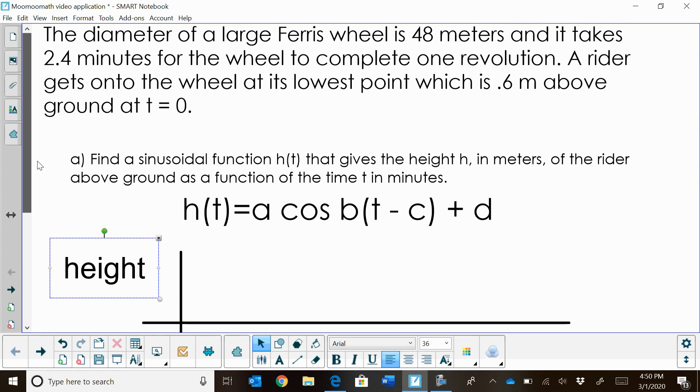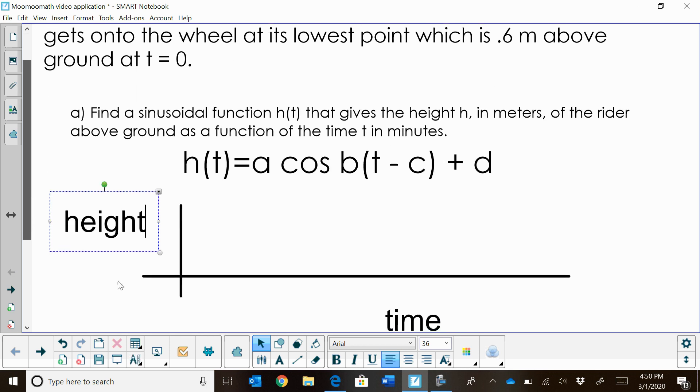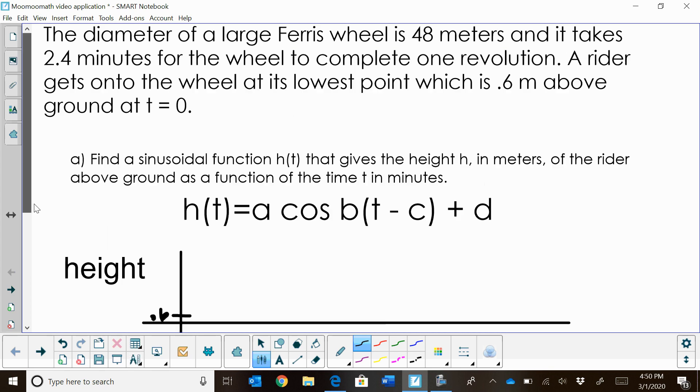We're loading the Ferris wheel at 0.6 meters high. So I'm going to go over to my y-axis and label 0.6. Now, it says that the diameter is 48 meters. That means at the very highest point, I'm going to be 48 meters above the 0.6. So I'm going to add 0.6 and 48 to get the maximum height of 48.6 meters.